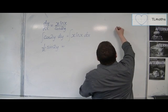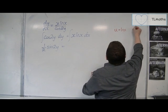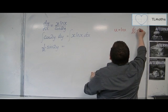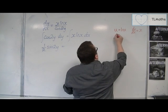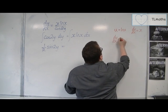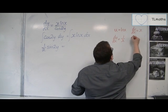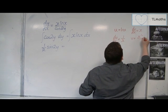So using the LATE rule, u is going to have to be log x and dv by dx will have to be x. So du by dx is 1 over x and v will be x squared over 2.